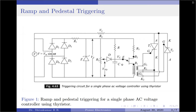On the other hand, when the pedestal voltage is high: with a high value of Vpd across capacitor C, the charging time of the capacitor will be small because the capacitor is already charged to a high value of Vpd. So it takes a short time for the capacitor voltage to reach the threshold voltage of the UJT, η·Vz. Therefore, α will be low and the average output load voltage will be high.